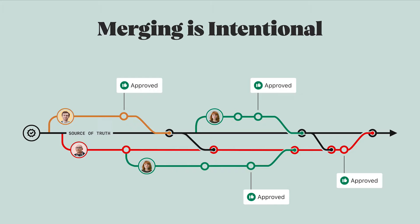In our previous videos about master, we learned how to maintain a source of truth by being intentional and consistent about how we decide when work is done. This means that a project's master is a place for finished and approved work only. That also means that merging a branch into master signals that it's been approved and is ready to be used and implemented by the rest of the team.